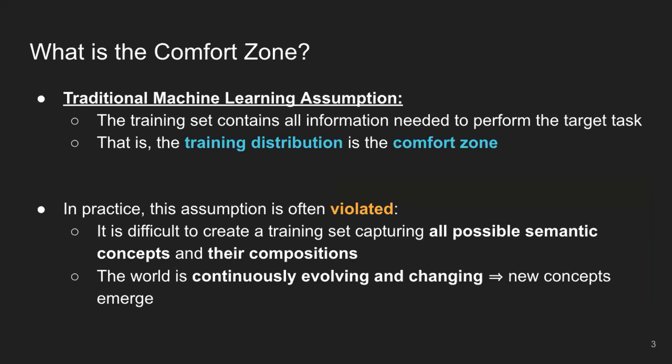So what do we mean when we say the comfort zone? In traditional machine learning, we make the assumption that our training set contains all of the information needed to perform a target task. When we refer to the comfort zone, we're referring to the training distribution — this is the distribution that our agent is most familiar with, is comfortable in, and is probably going to make the most accurate predictions in. But in practice, this assumption is often violated. It's really hard to collect a training set that captures all of the diversity in the world, especially at any given point in time. There are many different semantic concepts and many different compositions of those concepts. And we're living in a world that exists on a time axis — it's constantly evolving, with new types of items being produced every year and new things we'd like our agent to adapt to over time.